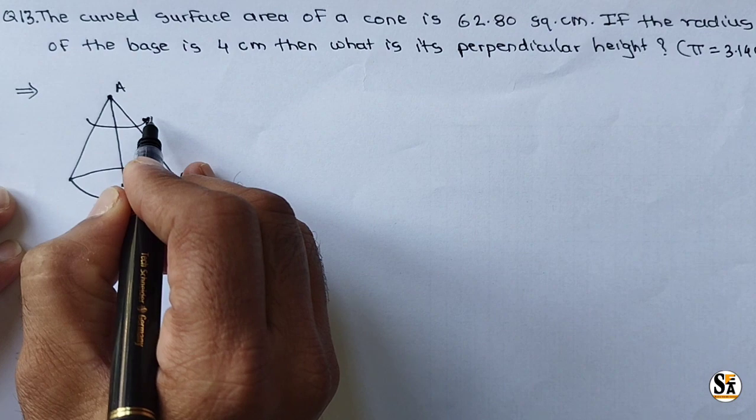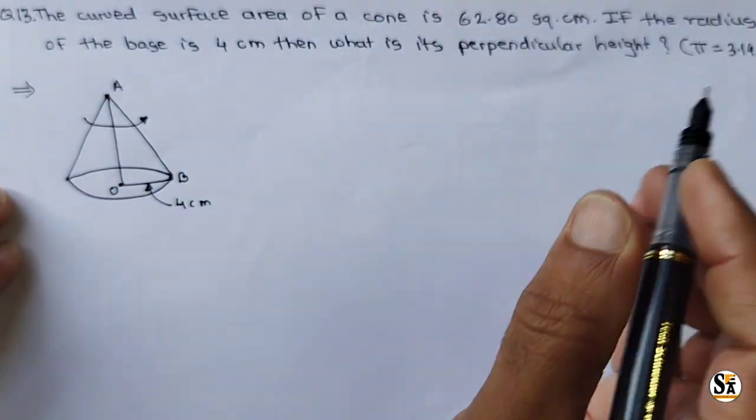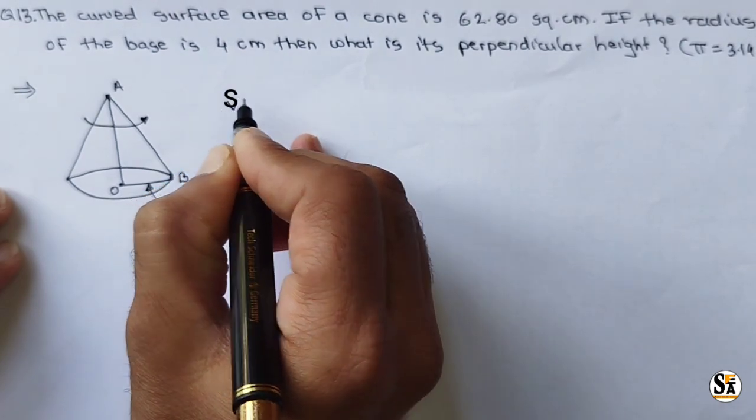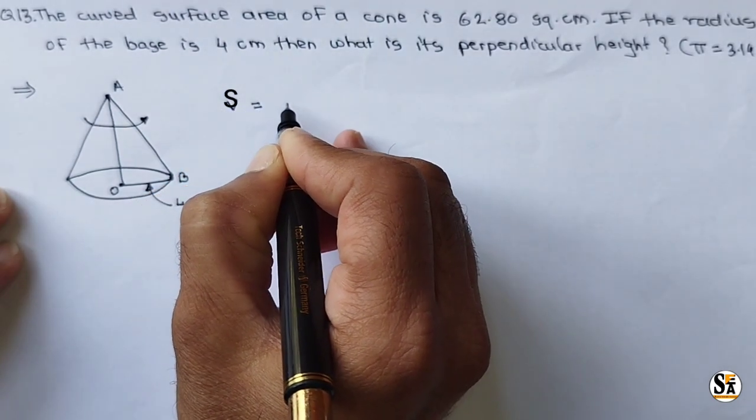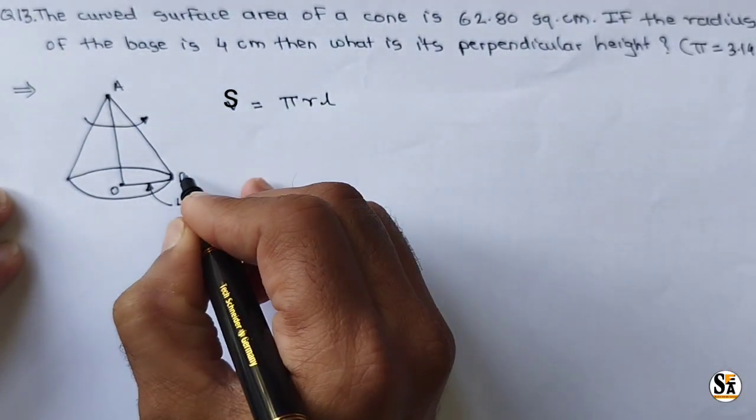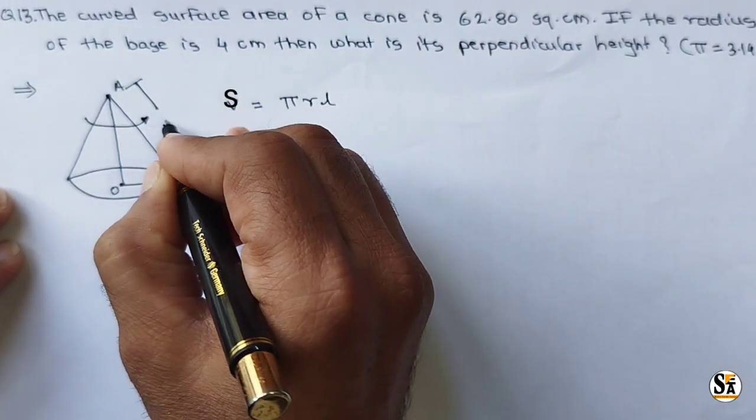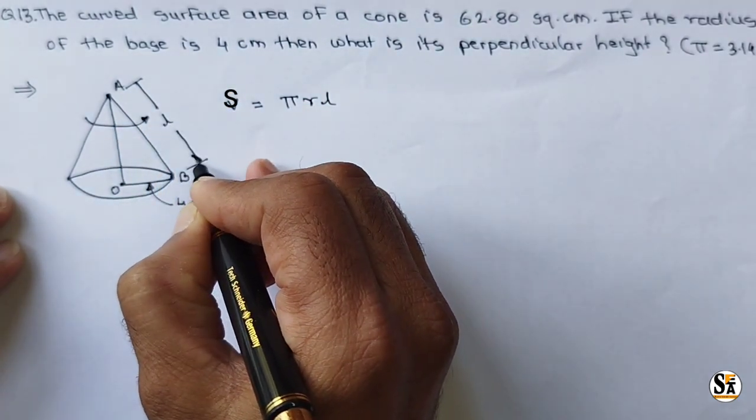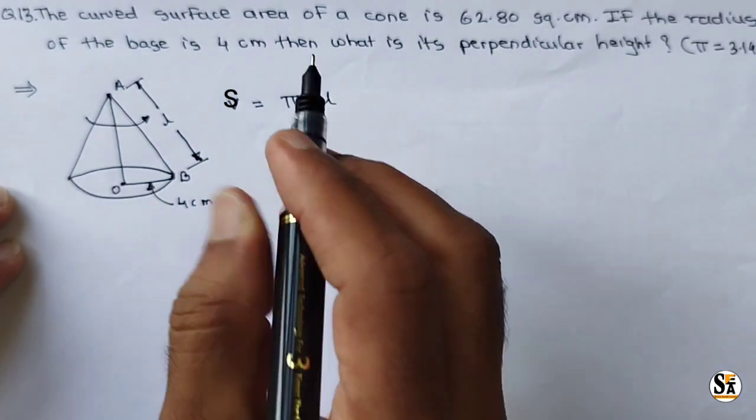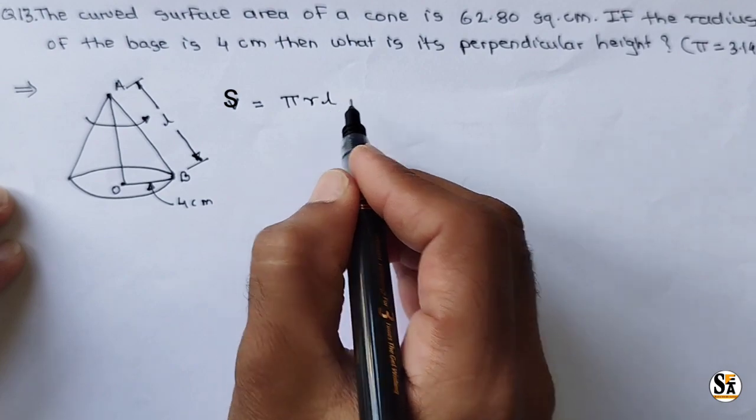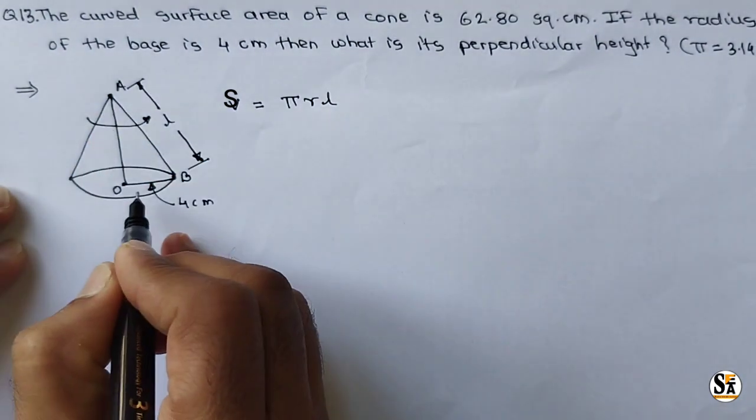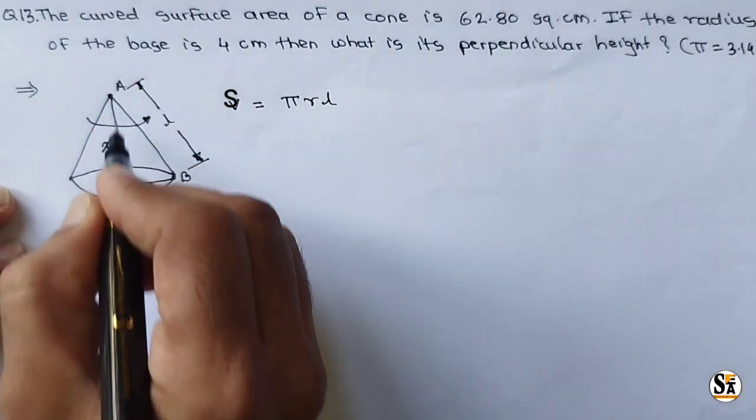And curved surface area of cone 62.80 square centimeter is given. We know the formula for curved surface area, that is equal to πRL, where L is this length. L is not a perpendicular distance. L is this length. So with the help of this formula we can calculate value of L. And after calculating value of L, using the Pythagoras theorem, we can calculate this distance X, that is AO.